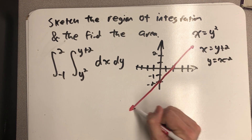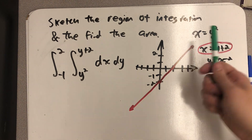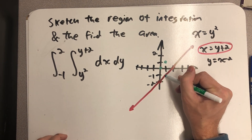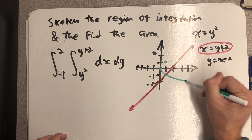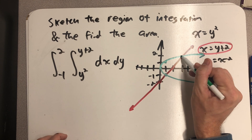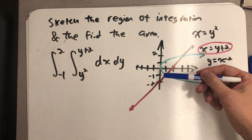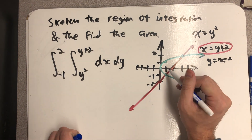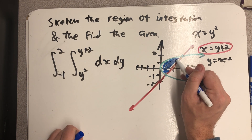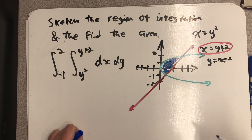So there's one of my limits of integration: x equals y plus 2. Now I need to sketch x equals y squared, which I'm going to think of as a nice sideways parabola. Then from y equals minus 1 — that's where one intersection point is — all the way up to 2, which I'm betting is where the other intersection point is.